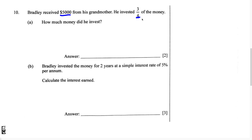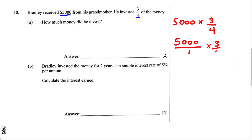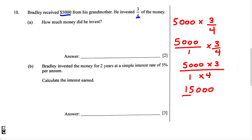When we set this problem up, it's going to look like this: 5,000 multiplied by three over four. We're going to have to simplify this. The way I'm going to do it is I'm going to turn 5,000 into a fraction by putting it over one. So multiplying fractions, we get 5,000 times three over one times four, which gives us 15,000 over four.